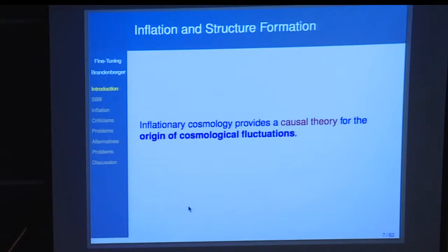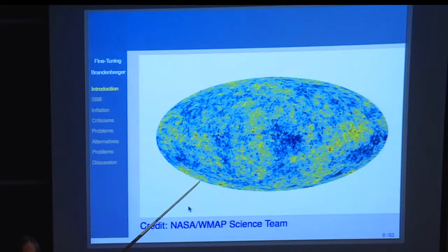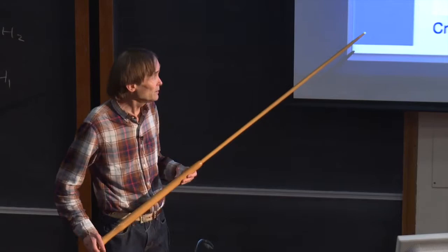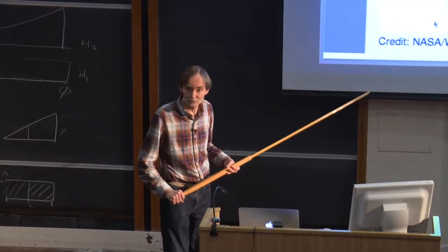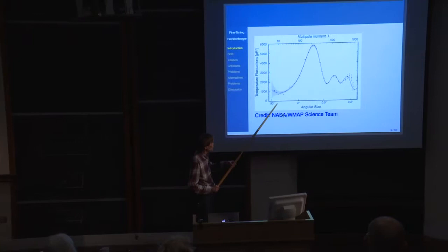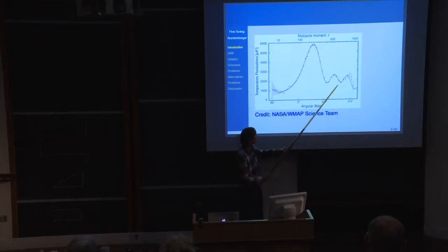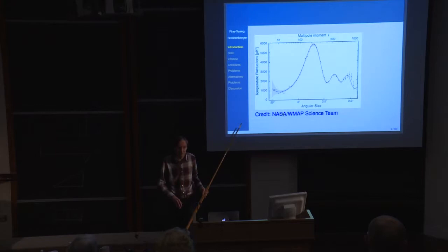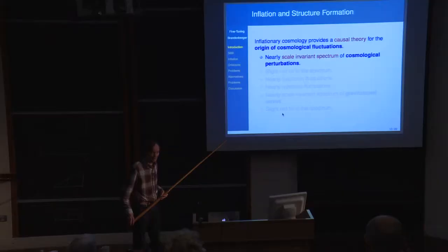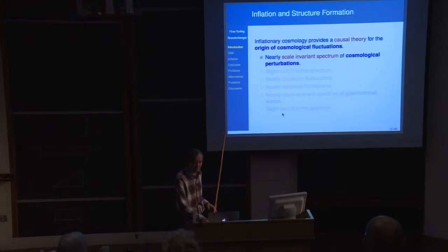More importantly for current astronomy, inflation was very successful because it provides a causal theory for the origin of cosmological fluctuations observed in the microwave background distribution of galaxies. We now have beautiful maps of these small amplitude deviations of the temperature of the microwave background from isotropy. These relative temperature fluctuations are one part in 10 to the minus 5. This is the power spectrum of these fluctuations — large angular scales, small angular scales, the data, statistical error bars, systematic uncertainties — and there's a red curve that fits the data remarkably well.